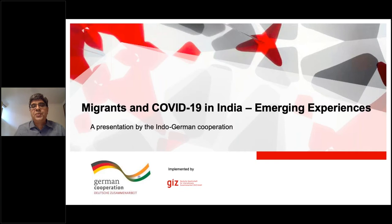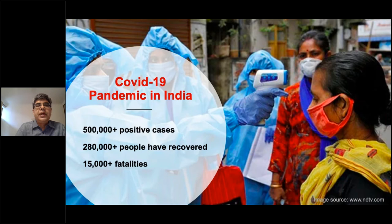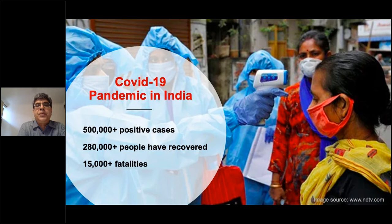Good evening from India, and good morning and good afternoon to different parts of the world. I'll share with you a very dynamic and rapidly changing context vis-à-vis COVID-19 in India. Looking at the current situation, there are almost half a million positive cases, and the good part is that almost 280,000 out of these have recovered. Fatalities so far have been a little lower at about 15,000 plus, but rapidly rising. Remember, India is also a country with about 1.3 billion people, so this is still on a rise and we don't know how it will move forward.